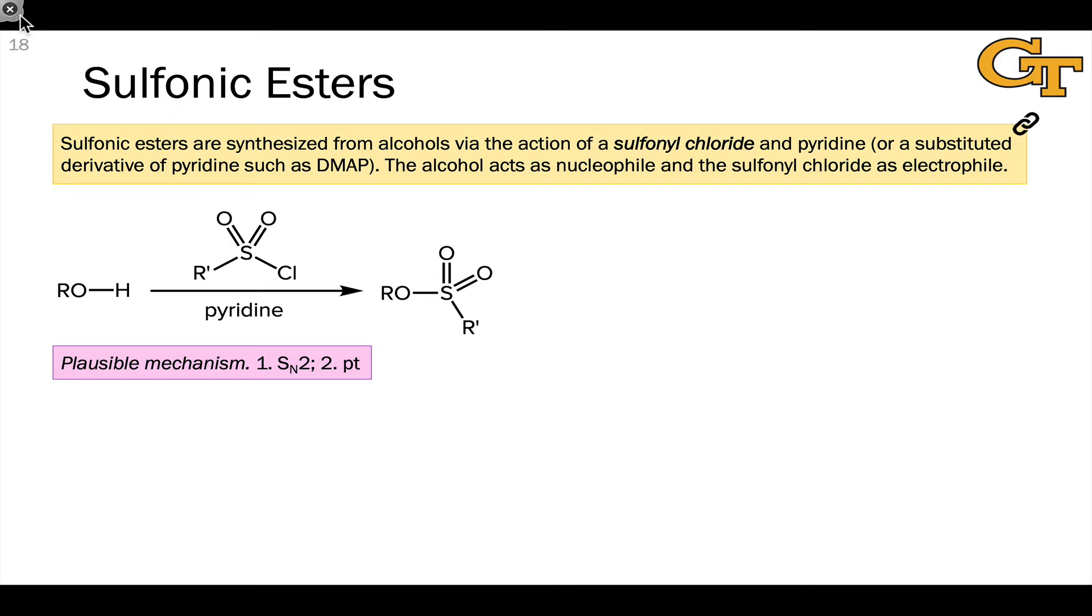Now let's talk about how we make sulfonic esters or sulfonate esters from alcohols. The basic reaction type here is a substitution process. If we look at what's going on within the alcohol, what appears to be happening is the substitution of an H, the hydroxyl H, in the starting alcohol for the sulfonyl group, for the SO2R group.